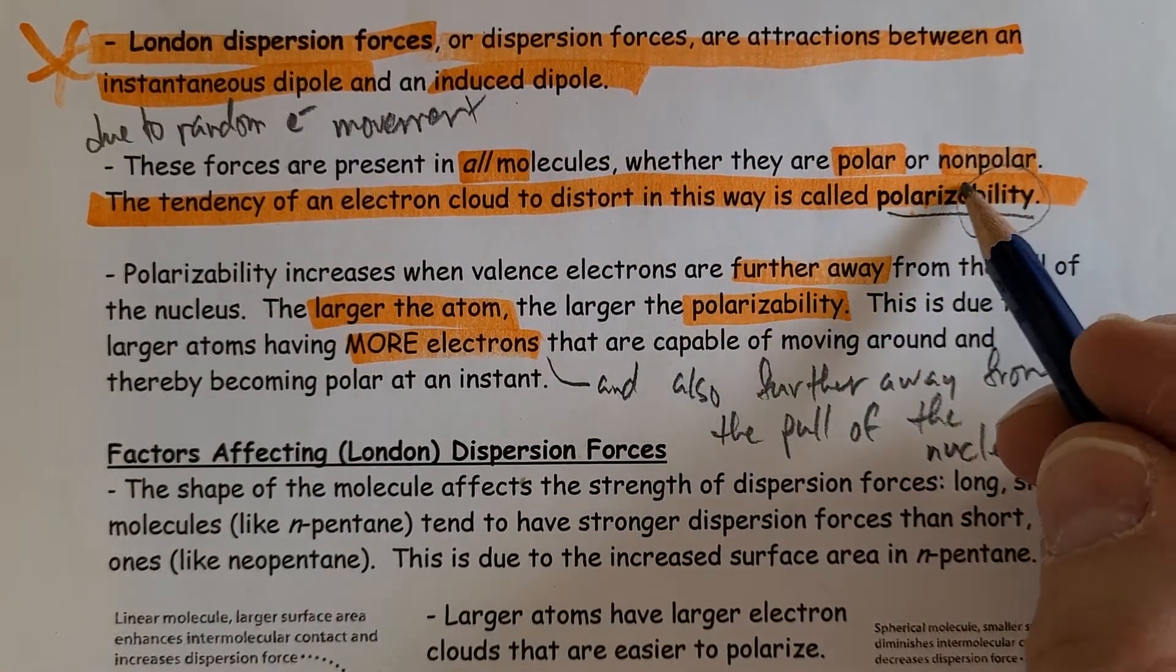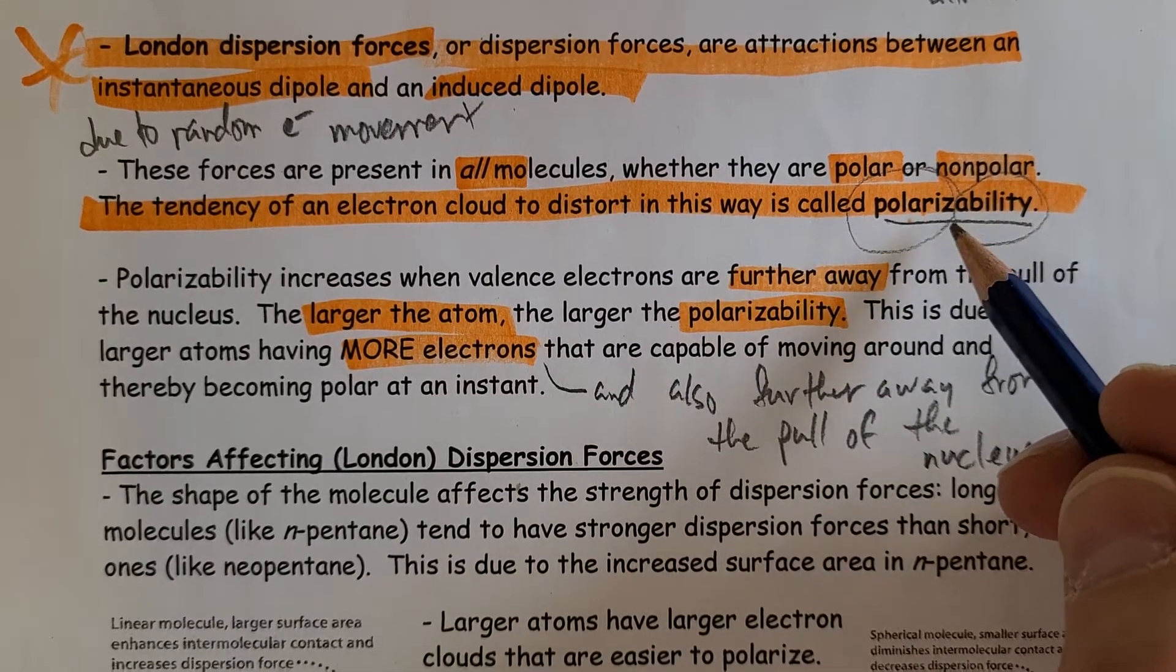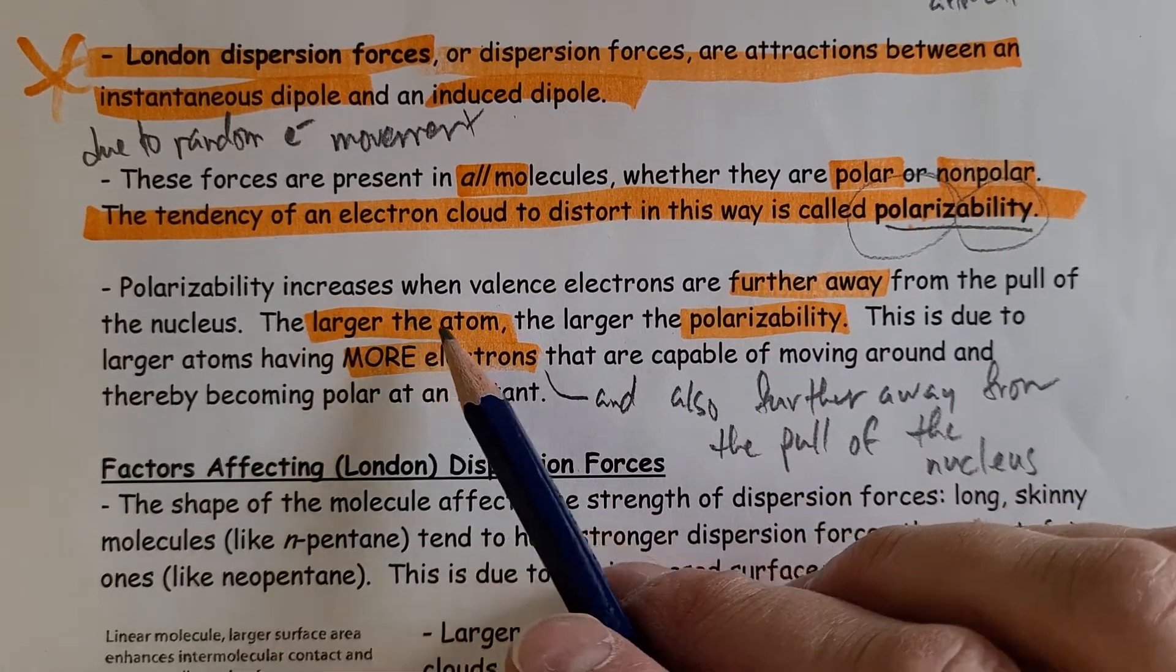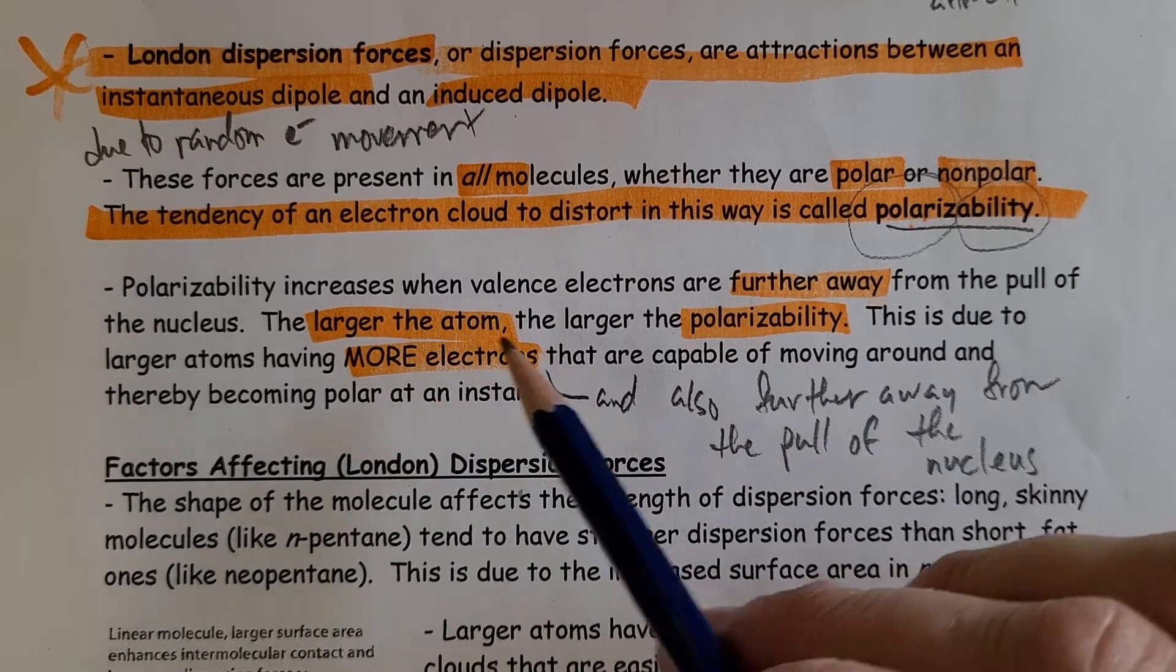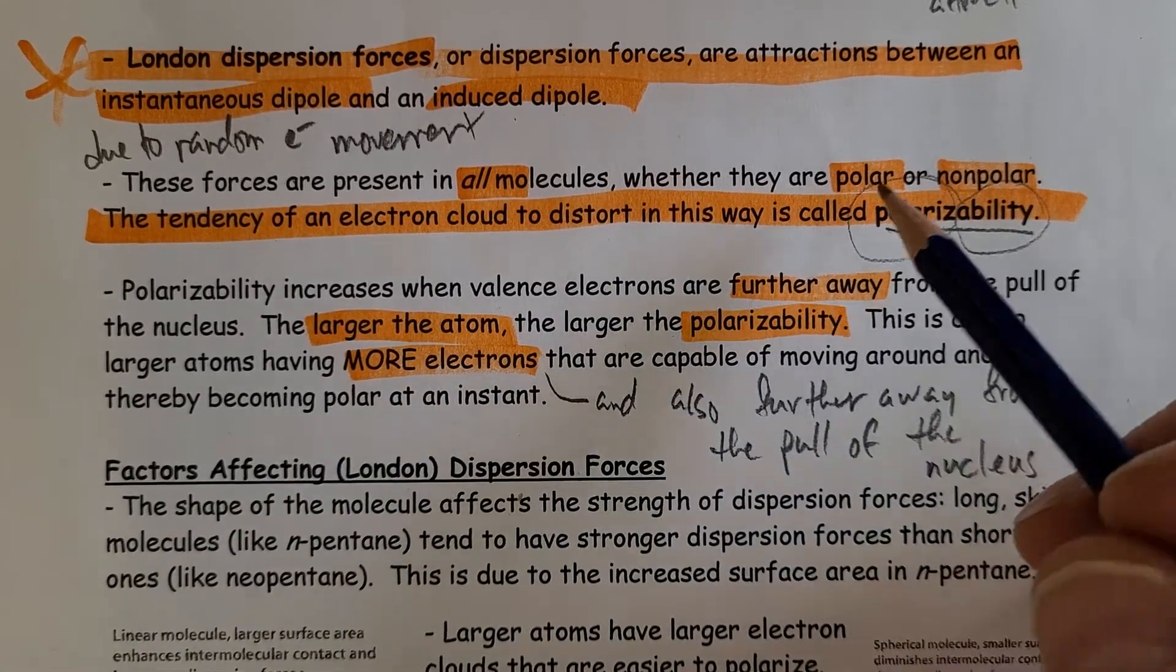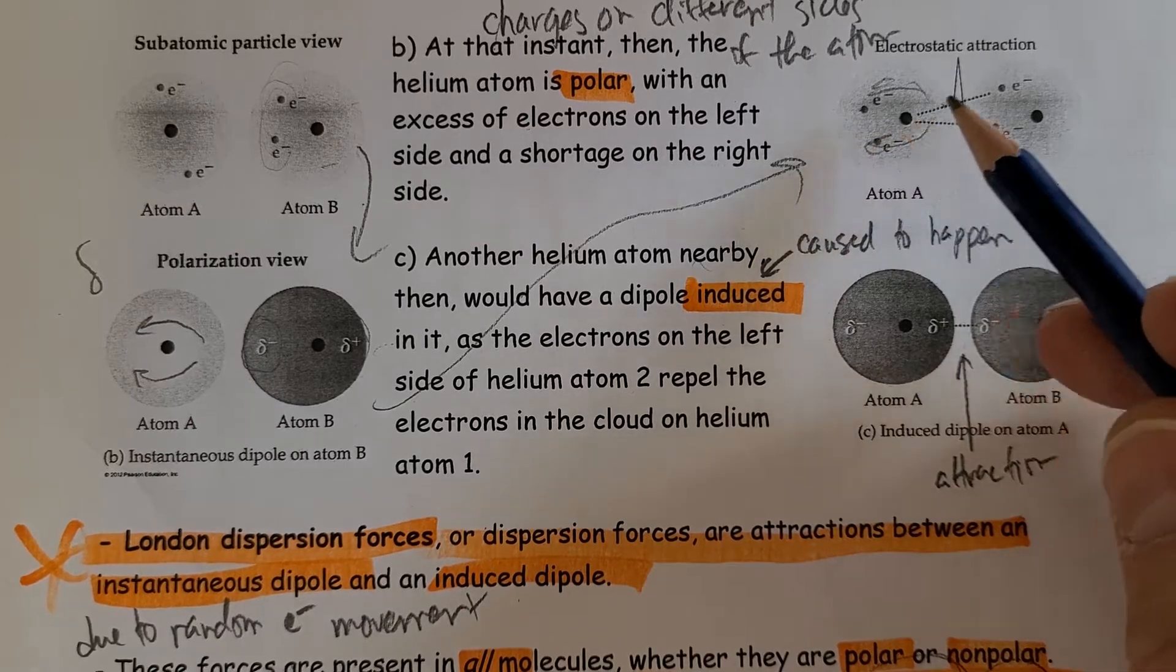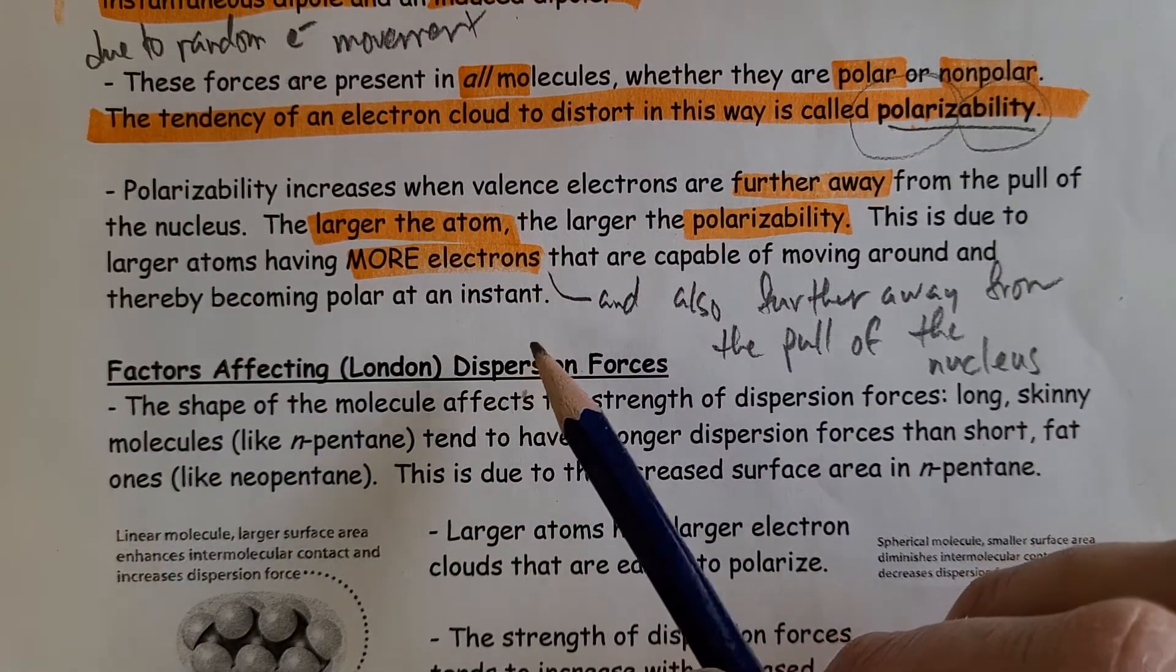The ability to become a temporary dipole, to become temporarily polarized. Polarizability increases when valence electrons are further away from the pull of the nucleus, because that means they're free to rotate, free to move around. These electrons are held close to the positive nucleus, so not a lot of freedom. But the further they are out, the less hold the nucleus has on them.